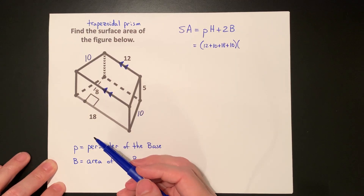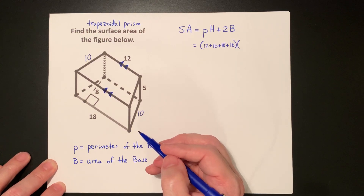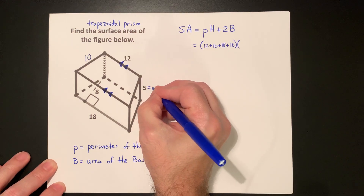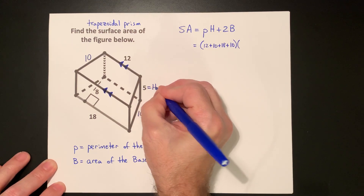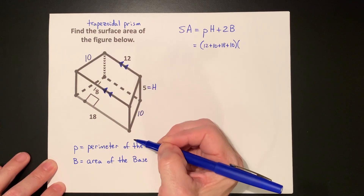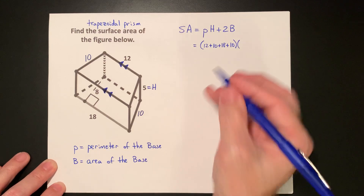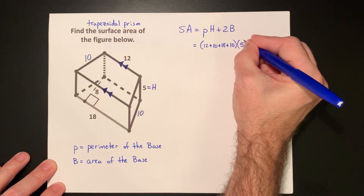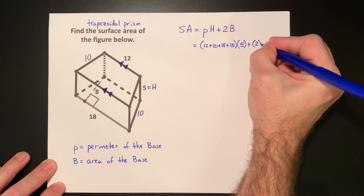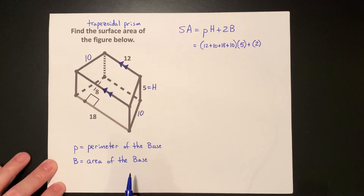The height is the distance between the bases, and our bases are the trapezoids. So this is our height — the distance between the two trapezoids, the two bases. This height is 5, plus 2 times the area of the base.